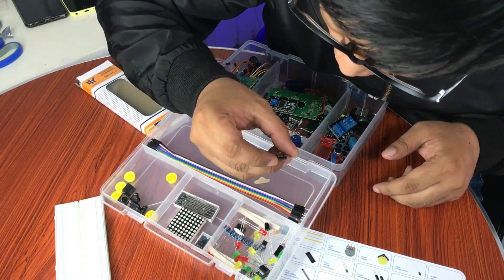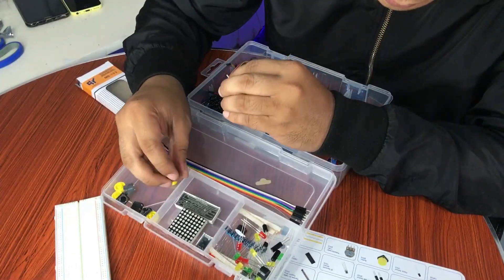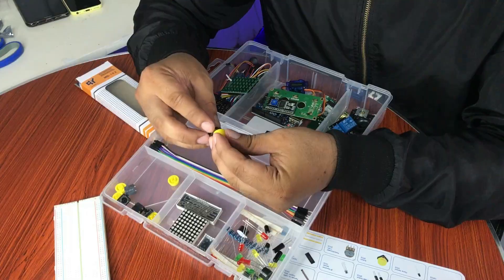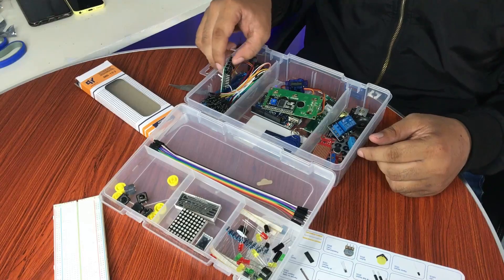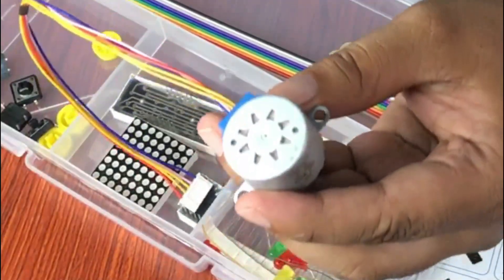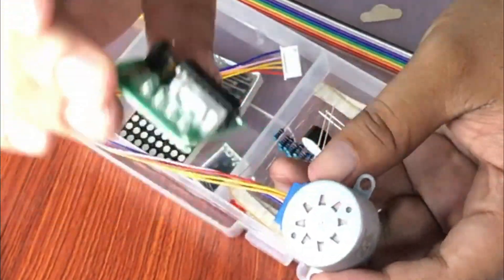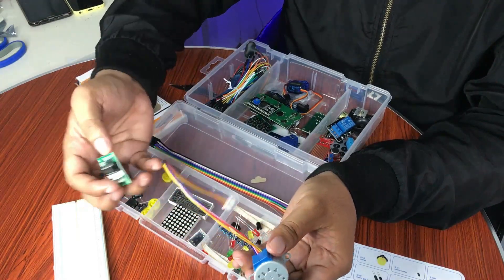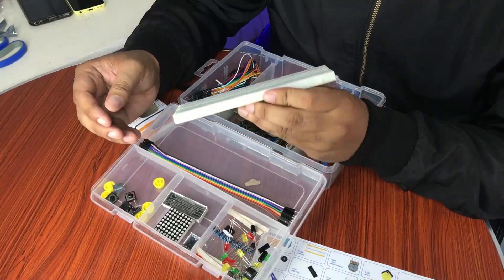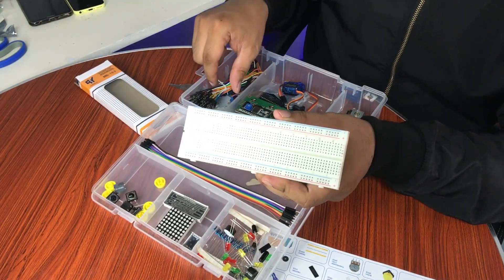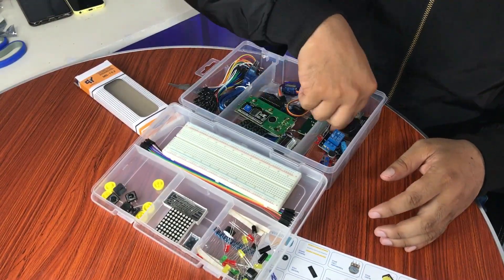This is the tilt ball switch, two of them. Five piece button here. Stepper motor, stepper motor, and it has its stepper motor driver here. This is the stepper motor driver, this is the stepper motor. 830 tie points breadboard, and we will be using these wires. We have here the RGB module, RGB.